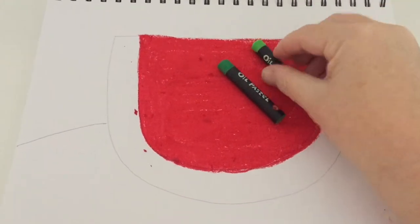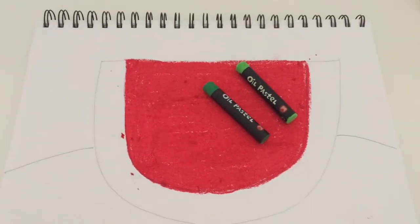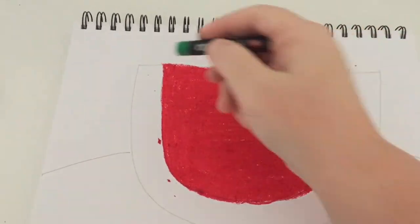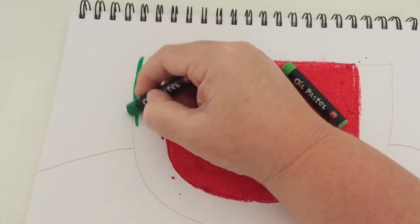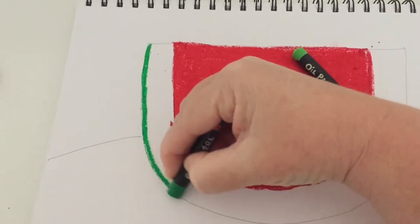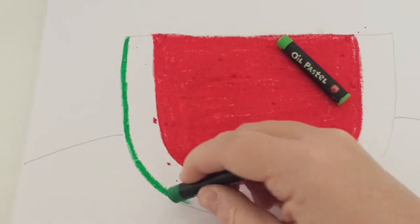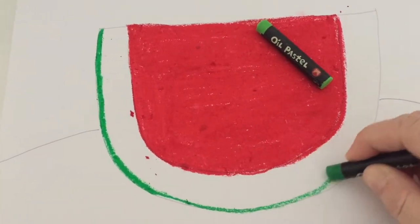Next, grab a light green and a dark green. I'm using oil pastels but textas or coloured pencils are perfectly fine. I'm going to outline with dark green first, all the way around the outside of the semi-circle in my darker green shade.